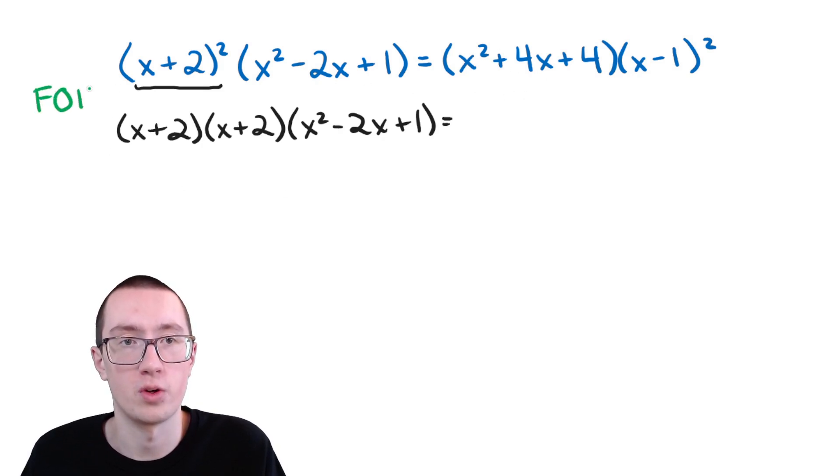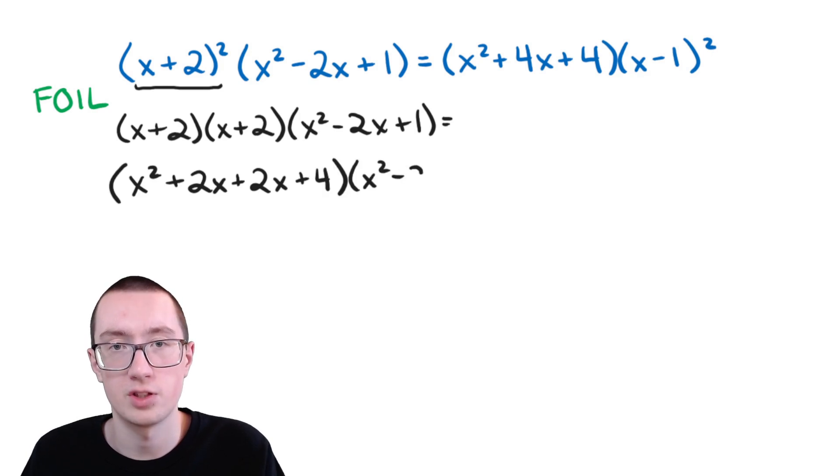So we need to follow the steps of foil. So we're going to have first for f, so that's x times x, which is x squared. Then we have o for outer, so that's x and 2. x times 2 is, well, x times 2. And normally you put the number before the letter, so that'll be 2x. Then we have i, which is inner. So another 2 times x, which is 2x. And then we have 2 times 2 for last, which is 4. So this part still stays. And I'm going to move this over because it's getting away.